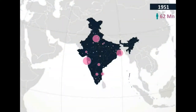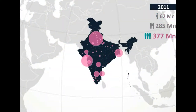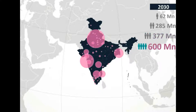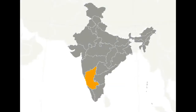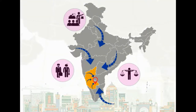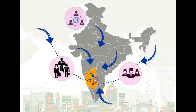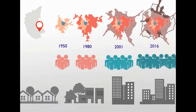India has 377 million people living in its cities and this is expected to grow to a whopping 600 million by 2030. Karnataka is one of the most urbanized states in India with the country's knowledge capital, Bengaluru. The city has been attracting people from different parts of the country and the world. With growth came challenges of quality of life and sustainability.